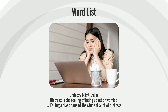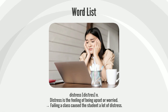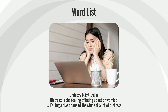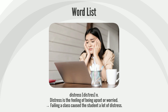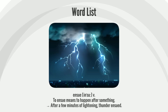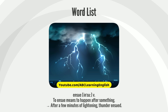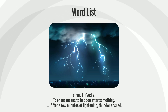Dogged: When someone's actions are dogged, they try hard to continue something. Her dad bought her a new jacket after her dogged request for one. Ensue: To ensue means to happen after something. After a few minutes of lightning, thunder ensued.